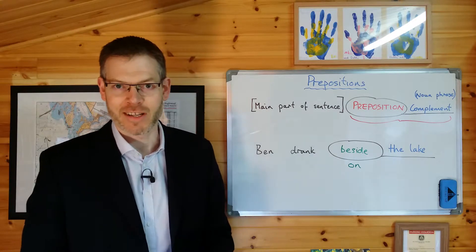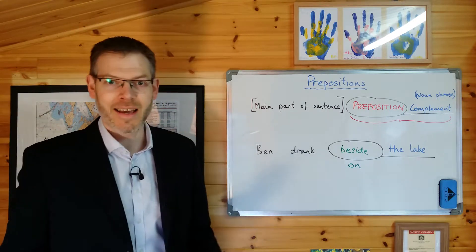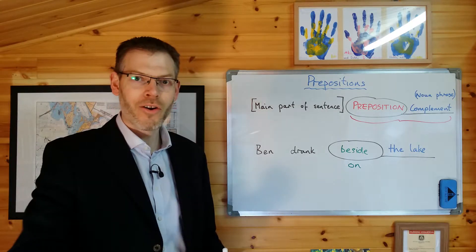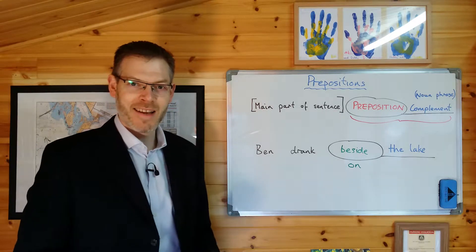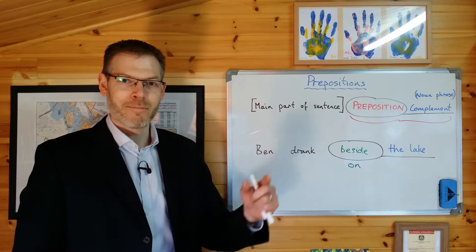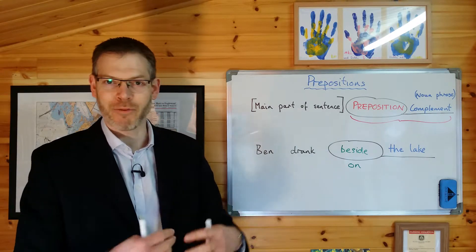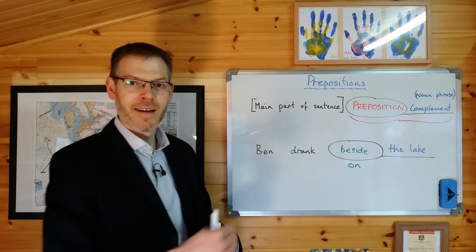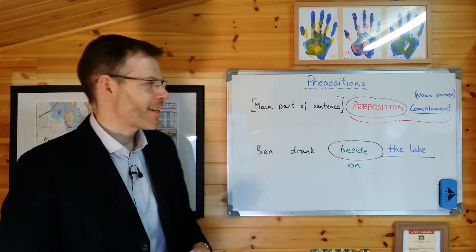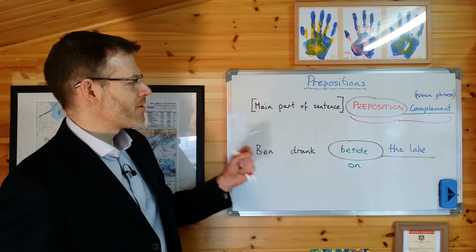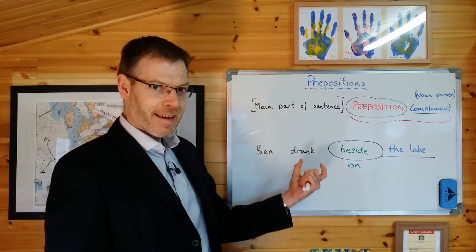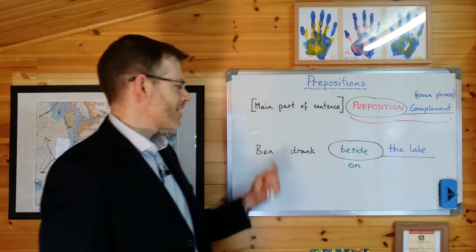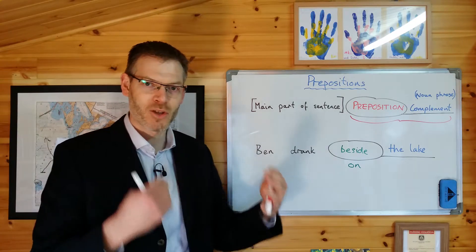Consider another example. 'I'm standing beside the table.' 'I'm standing on the table.' 'I'm standing under the table.' The prepositions beside, on, and under express different relationships between 'I'm standing' and 'the table'. The principle is the same: the preposition is like a link which connects its complement — a noun phrase — to the rest of the sentence and expresses the relationship between them.